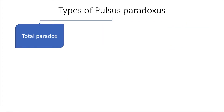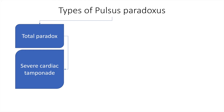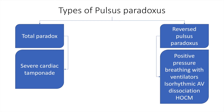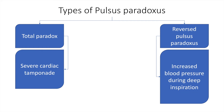The types of pulsus paradoxus include total paradox, because of severe cardiac tamponade, or it can be reversed pulsus paradoxus, which is because of ventilators, isorhythmic AV dissociation, or hypertrophic obstructive cardiomyopathy. Reverse pulsus paradoxus means there is increased blood pressure during deep inspiration, and the causes are HOCM, isorhythmic AV dissociation, and patients on ventilators.